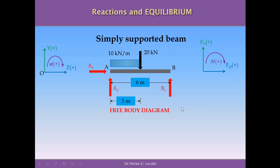After that, we replace the restrictions — the pin support and the roller — by the expected reactions that these supports will introduce in the beam. The pin support will introduce two reactions: a horizontal one we call AZ and a vertical one we call AY. The roller will produce a reaction in the vertical direction we call BY. These reactions are invisible, unknown in value and unknown in direction, but we need to choose a direction based on intuition in order to write equations of equilibrium and determine the values.